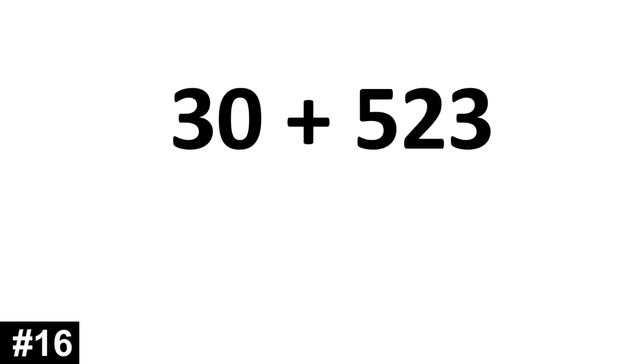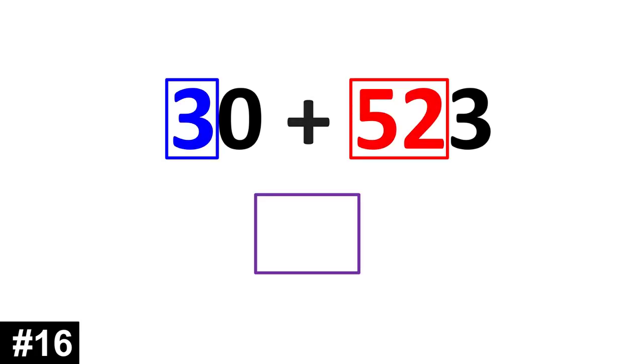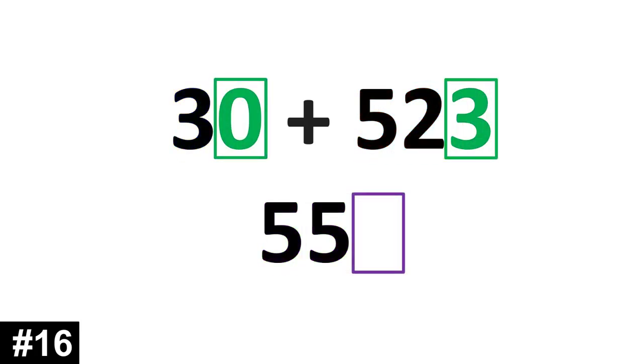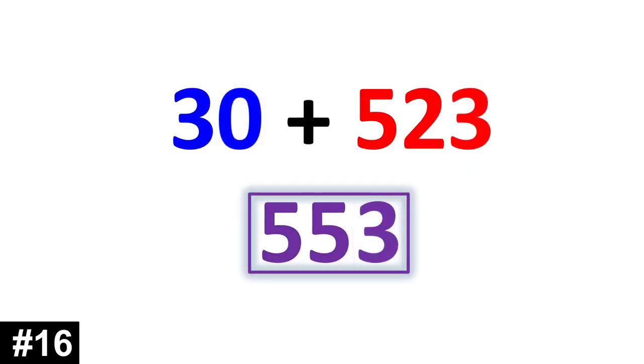30 plus 523. We have 3 tens plus 52 tens. 3 plus 52 is 55. We add the ones. 0 and 3 is 3. 553.